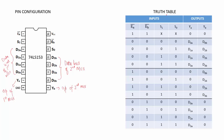The IC has two enable inputs EA bar and EB bar — both are active low — two select lines S1 and S0, and two outputs YA and YB. Let us understand how this truth table is written. Since both enables are active low signals, when EA bar and EB bar is 1, irrespective of the select lines, the output will always be 0.